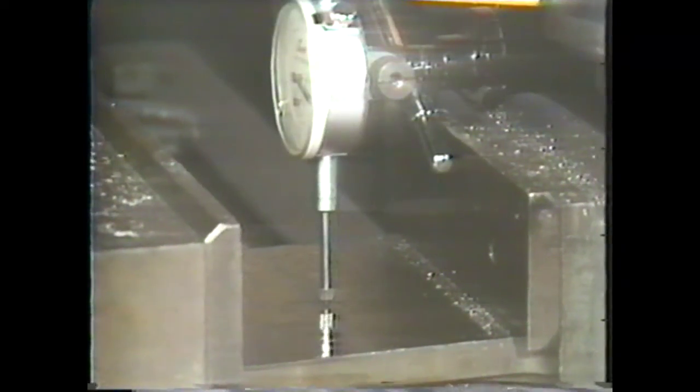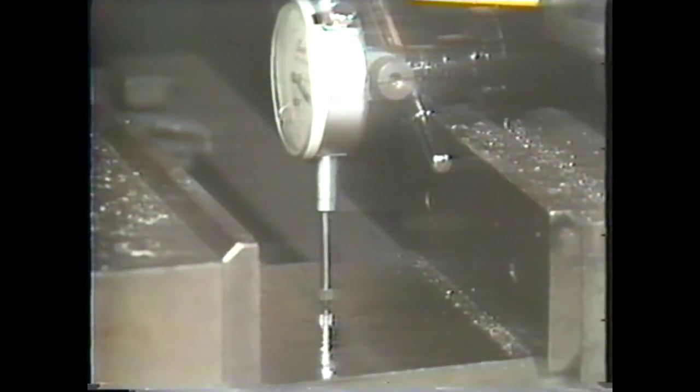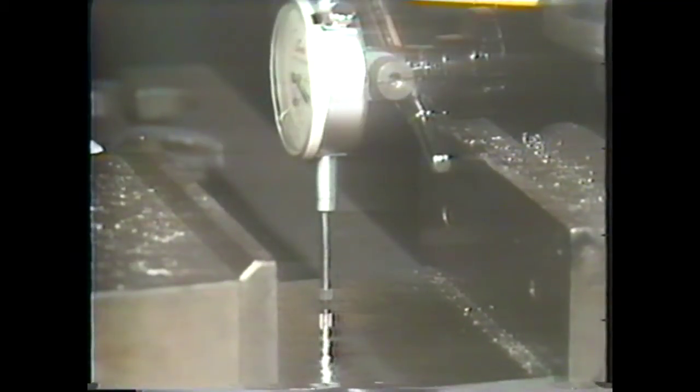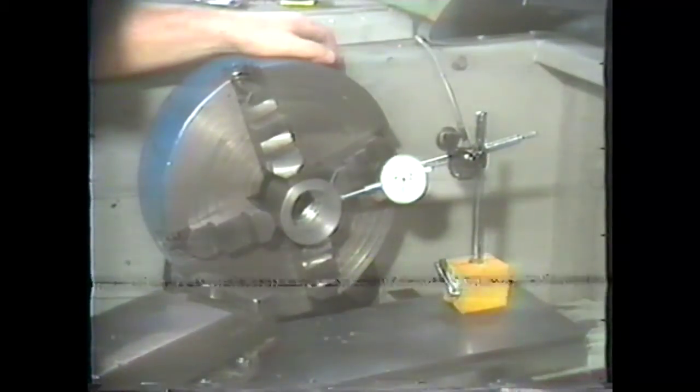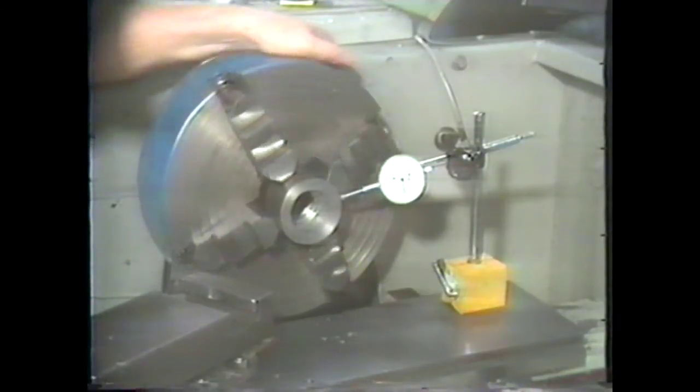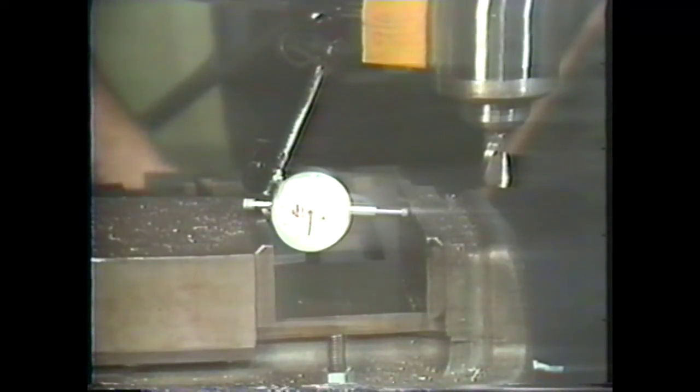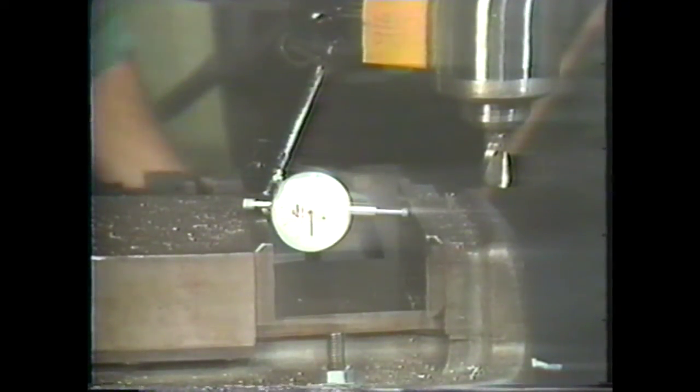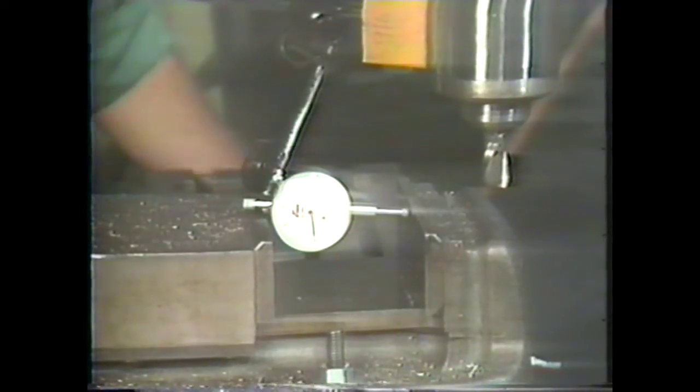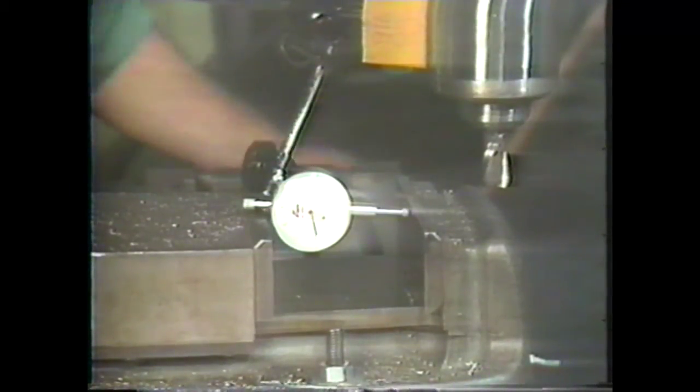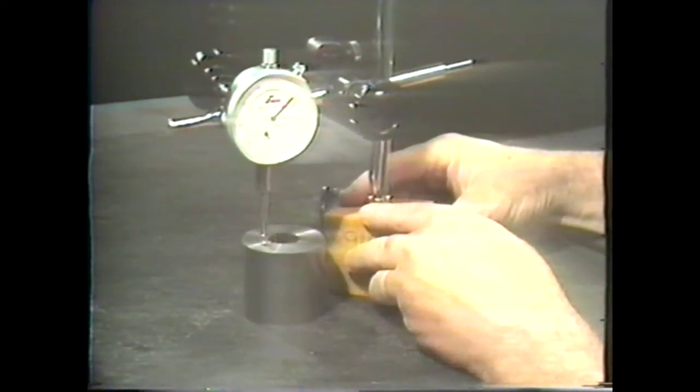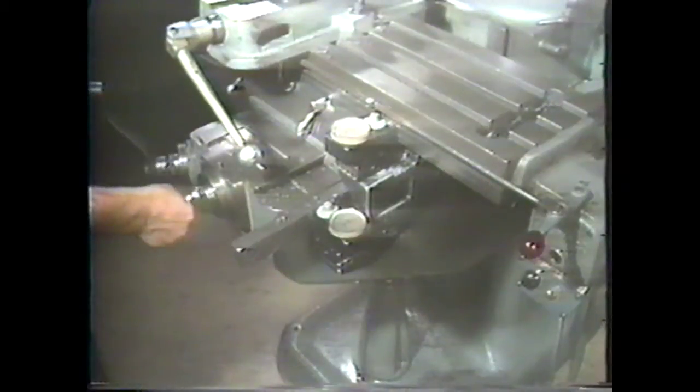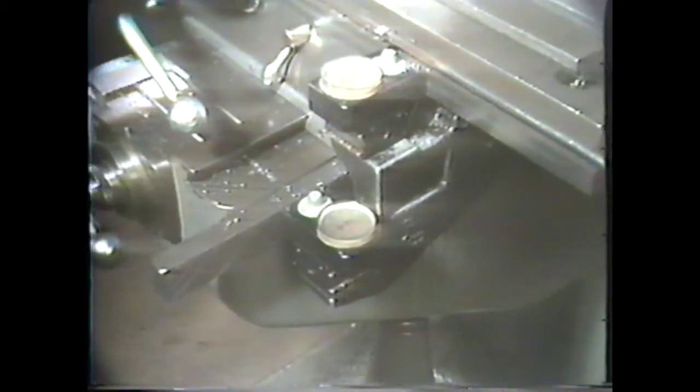Here are some situations in which you could use a dial indicator for accuracy and precision. To line up work in a four-jaw chuck. To check the vise jaws when lining up the vise on a vertical milling machine. To check the size of parts on a surface plate. And to measure the distance of table travel on this machine.